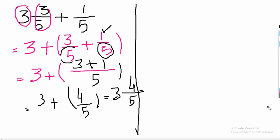Just break the factors. 3 multiply 5, 15 plus 3, 18 over 5 plus 1 over 5.